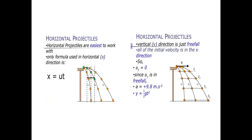First we learn what a horizontal projectile is, and then we'll cover equations for the general case. For a horizontal projectile, the path goes straight horizontally, so our velocity is horizontal. Horizontal projectiles are comparatively easier to understand and work with.